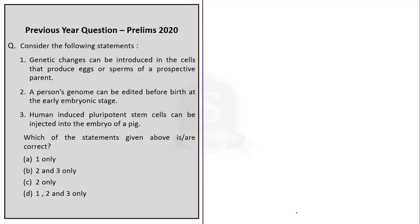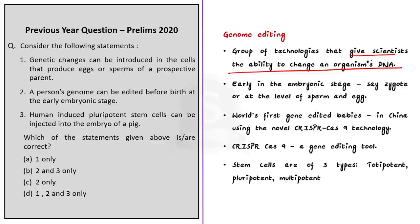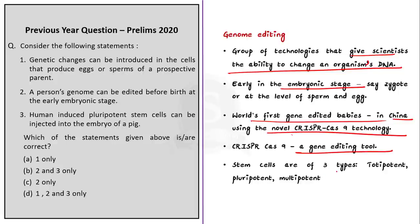For someone following the news with an eye for important areas like stem cell technology and gene editing technology, the next question can prove factually easy. The first statement is about gene editing. Genome editing, also called gene editing, is a group of technologies that give scientists the ability to change an organism's DNA — including humans — which is why it also has an ethical perspective. For gene editing to be effective, it should be done only in the embryonic stage, such as the zygote or at the level of sperm and egg. CRISPR-Cas9 is a novel gene editing tool, famously used to create the world's first gene-edited babies in China. So statements 1 and 2 are right, making Option D the answer.